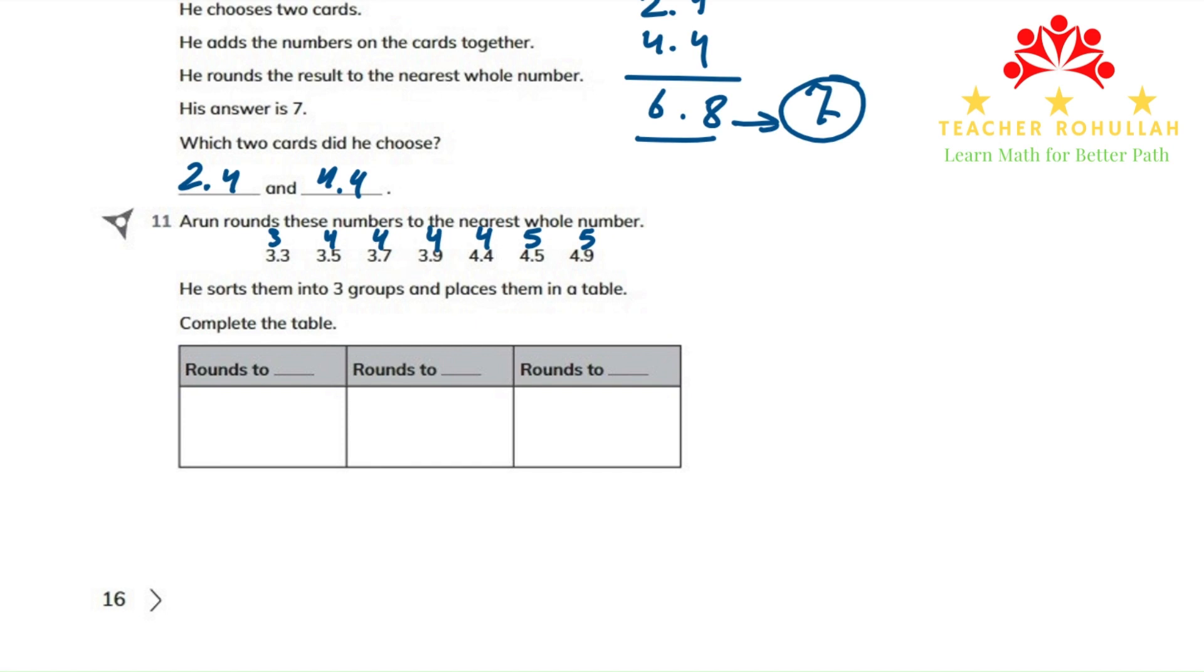To split these rounded numbers into three groups, we can have the numbers that round to 3, the numbers that round to 4,